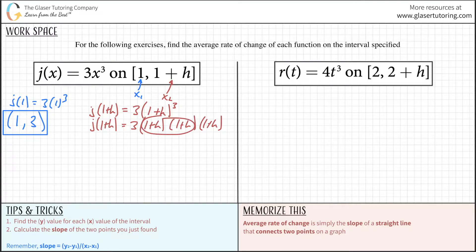First, I'll square it. So j of 1 plus h equals 3 times (1 plus h) times (1 plus h), written three times. Do the foiling between these two parentheses. This equals 3 times (1 plus 2h plus h squared). Now write that down and do another factoring.